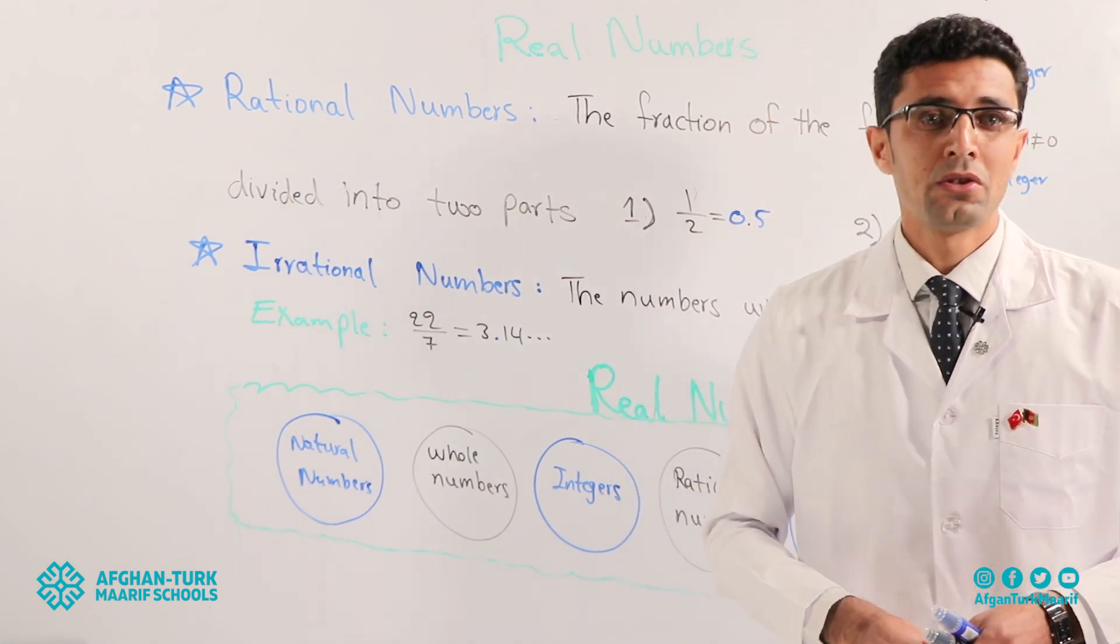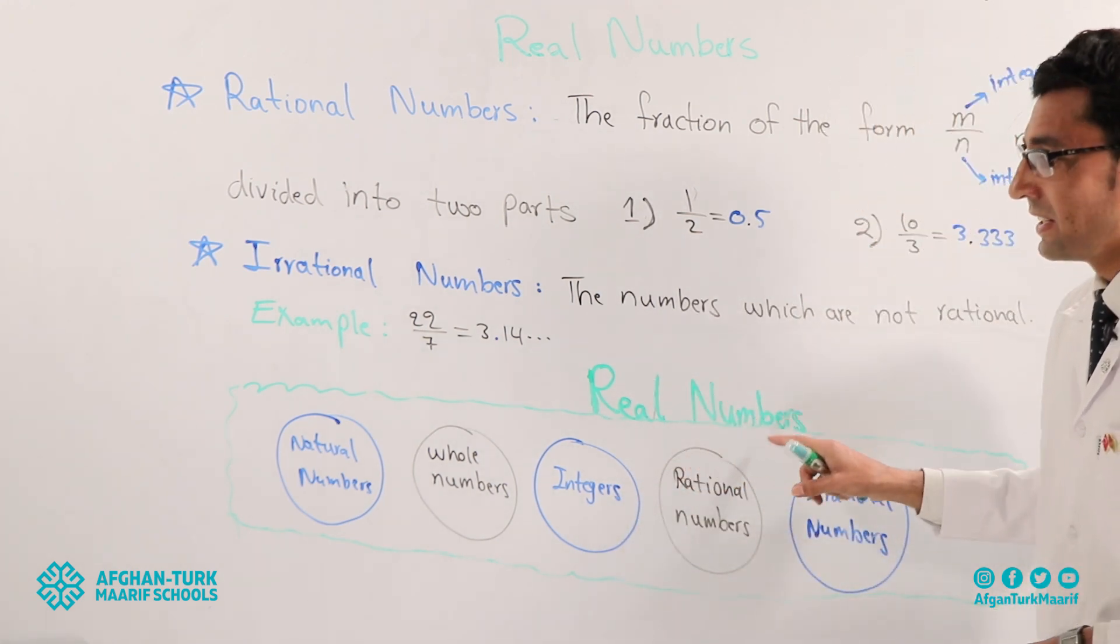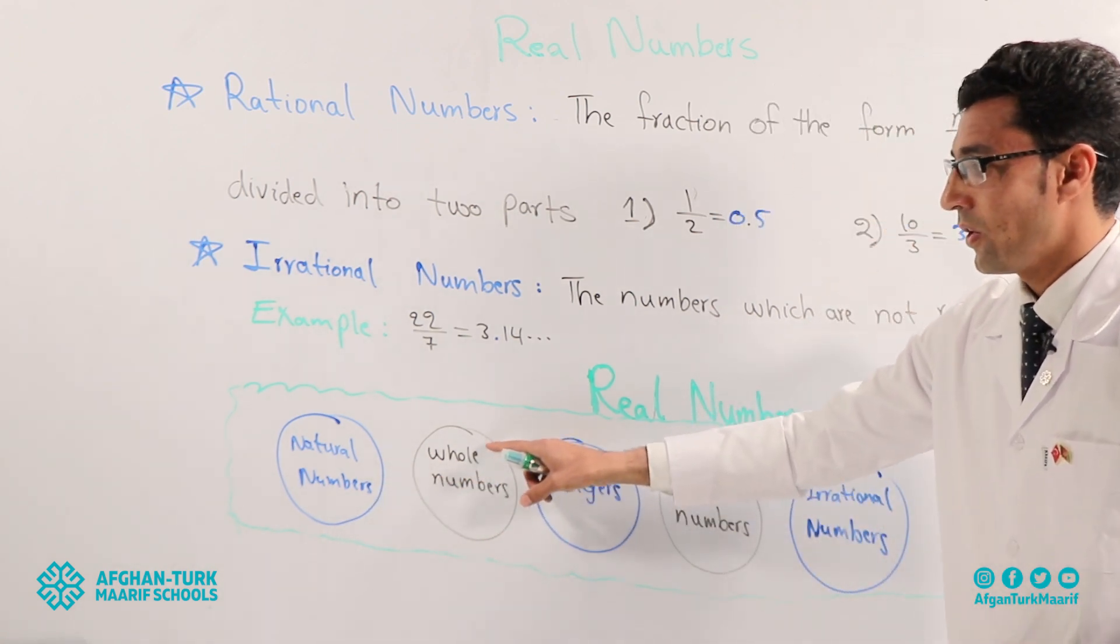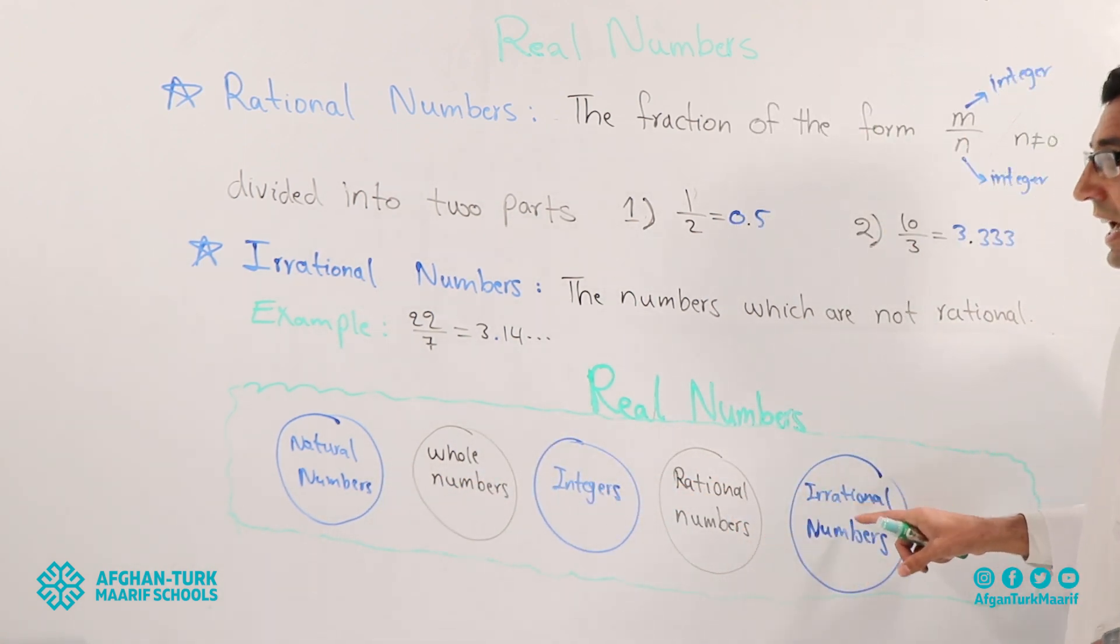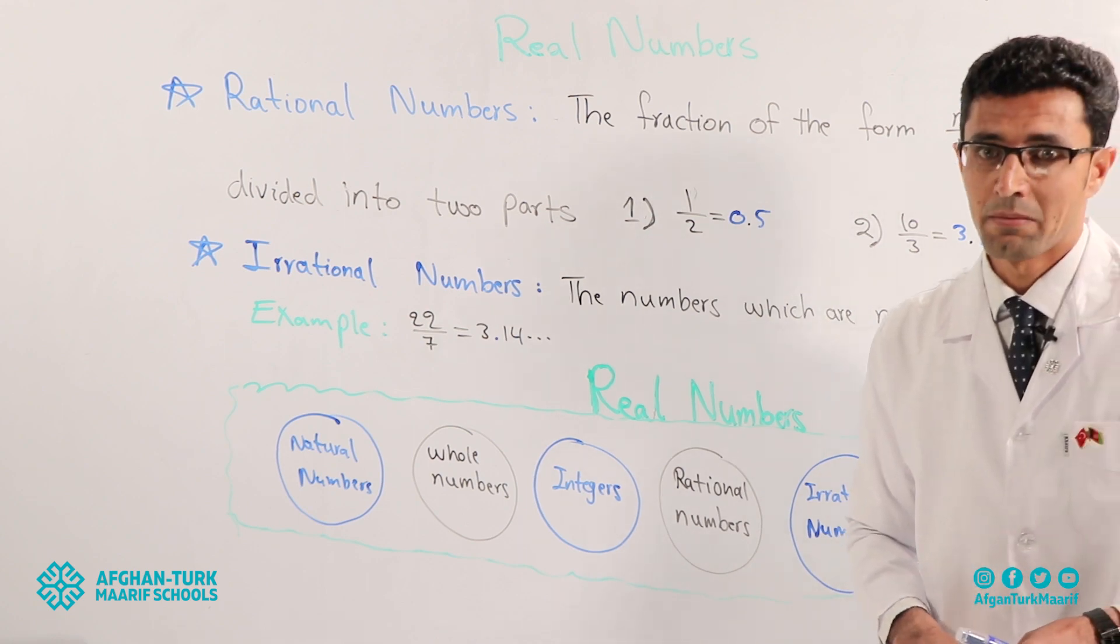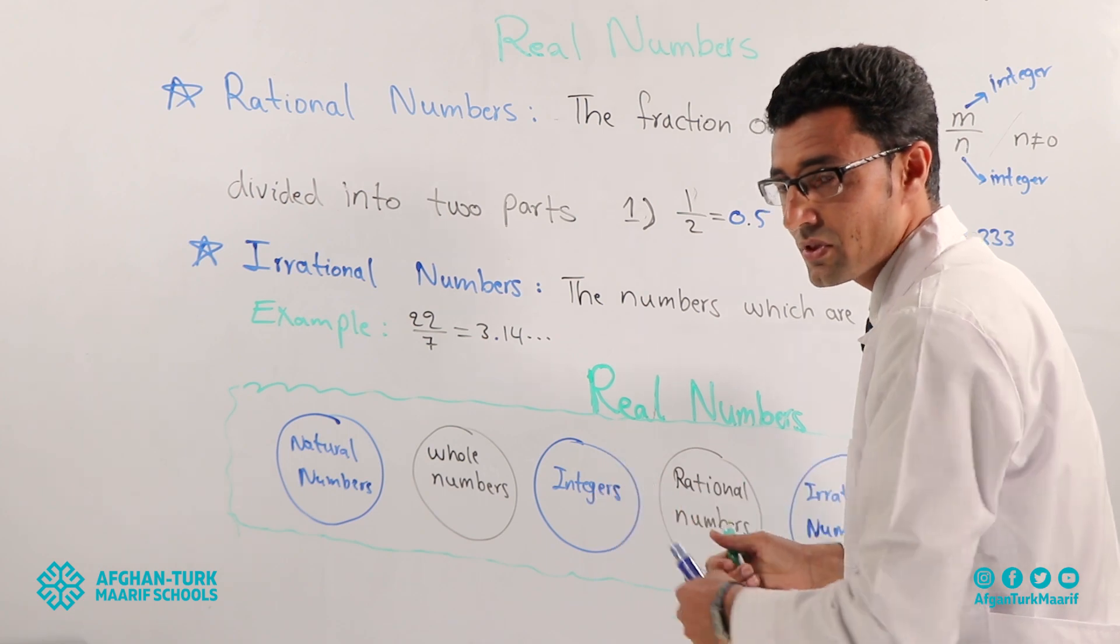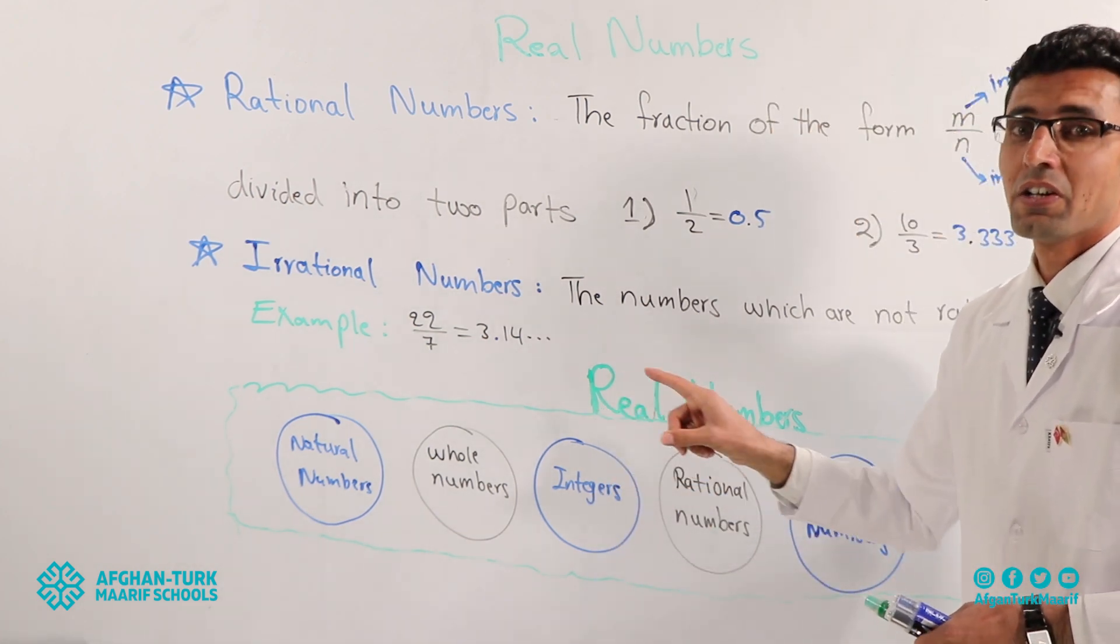Now I am sure that you know what is real number. What is real number? The set of all natural numbers, whole numbers, integers, rational numbers, and irrational numbers. These comes together and we call them all as real numbers.